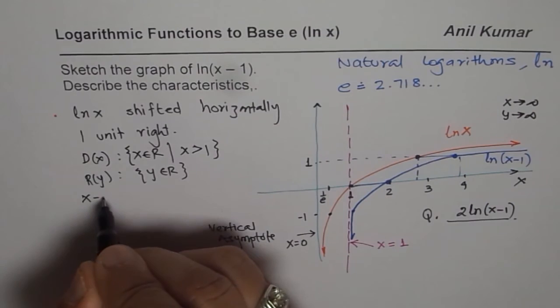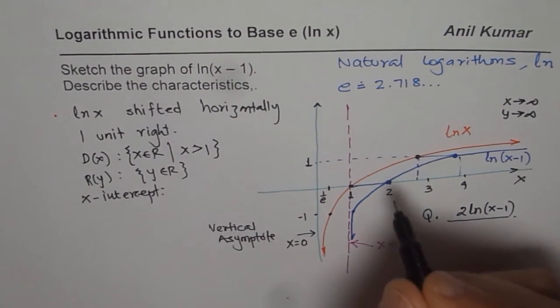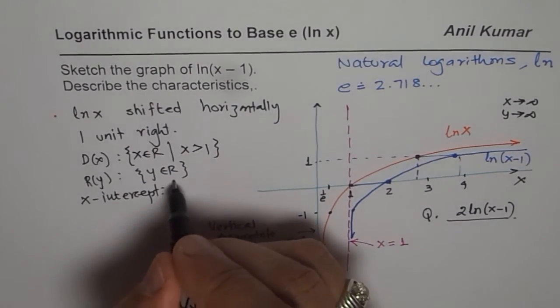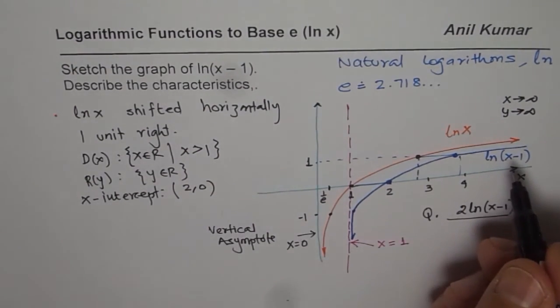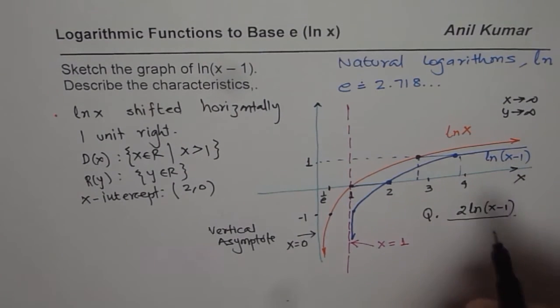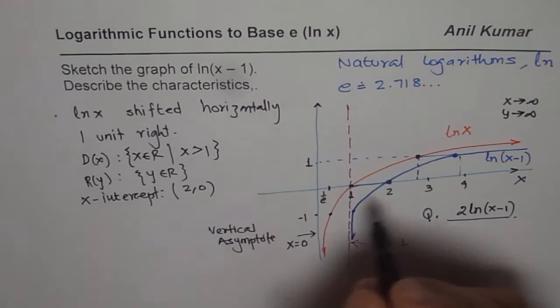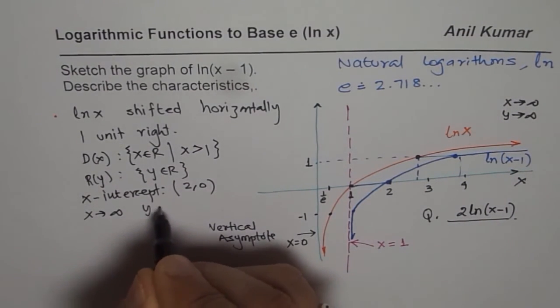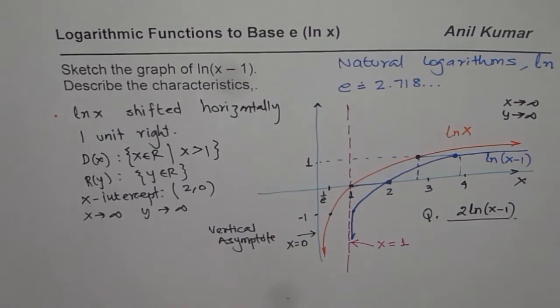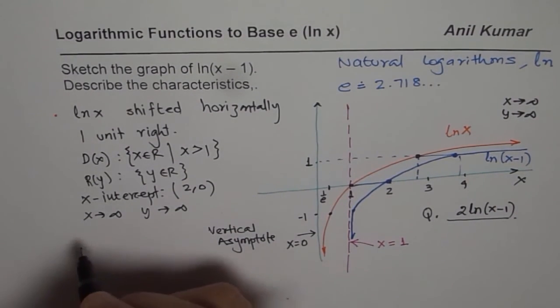We can say x-intercepts and y-intercepts. As far as x-intercept is concerned, it is now at 2, so the x-intercept will be at (2, 0) and it will not have any y-intercept. These are few important characteristics. End behavior is that when x approaches infinity, y approaches infinity.